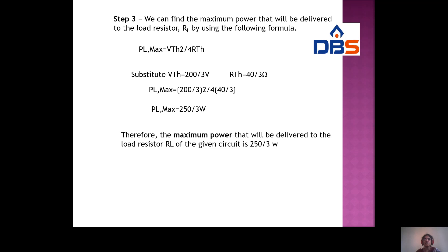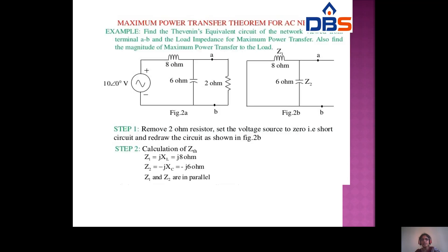For an AC circuit example: find the Thevenin equivalent circuit of network AB, the load impedance for maximum power transfer, and the magnitude of maximum power transferred to the load. The first step is to find ZTH, the Thevenin impedance, since it is an AC circuit.